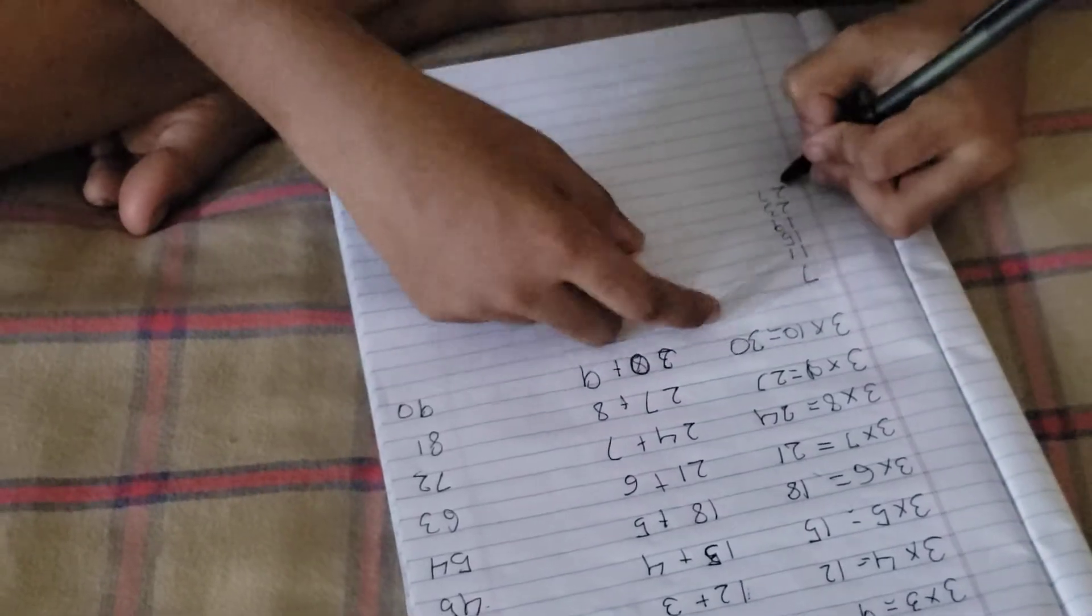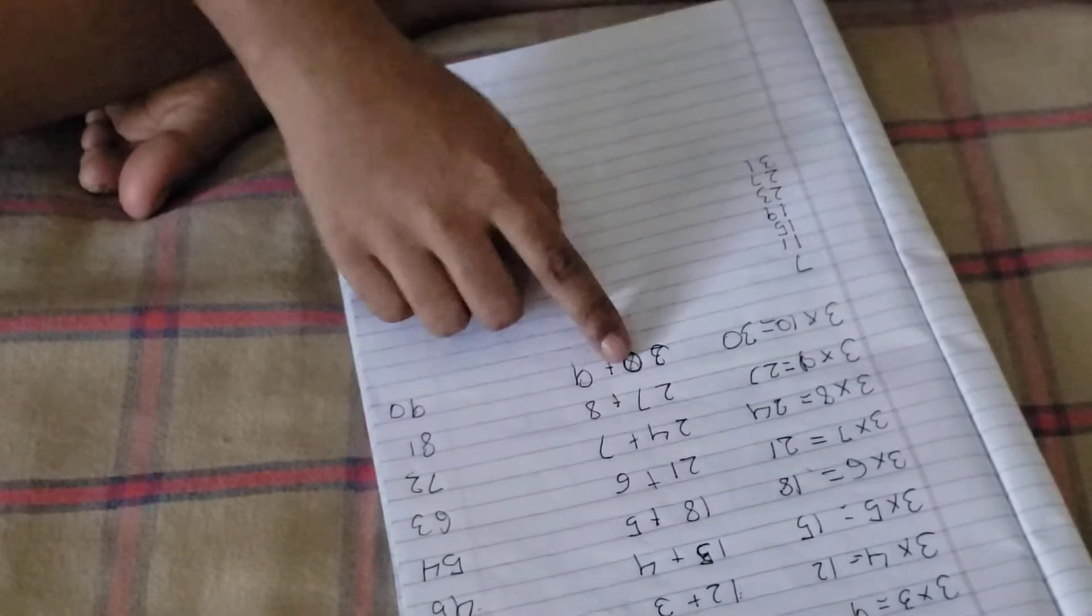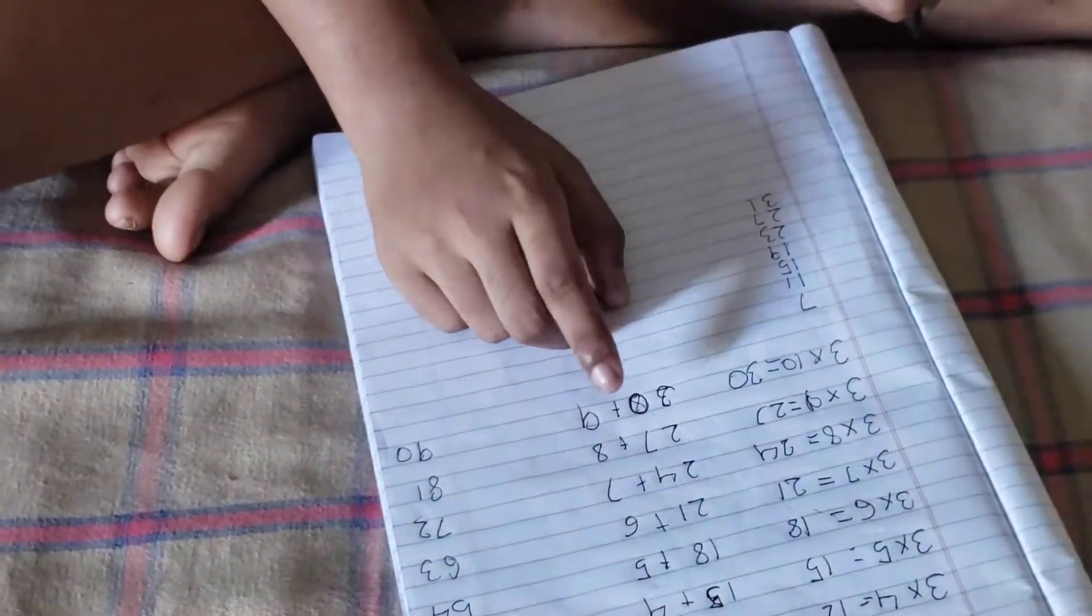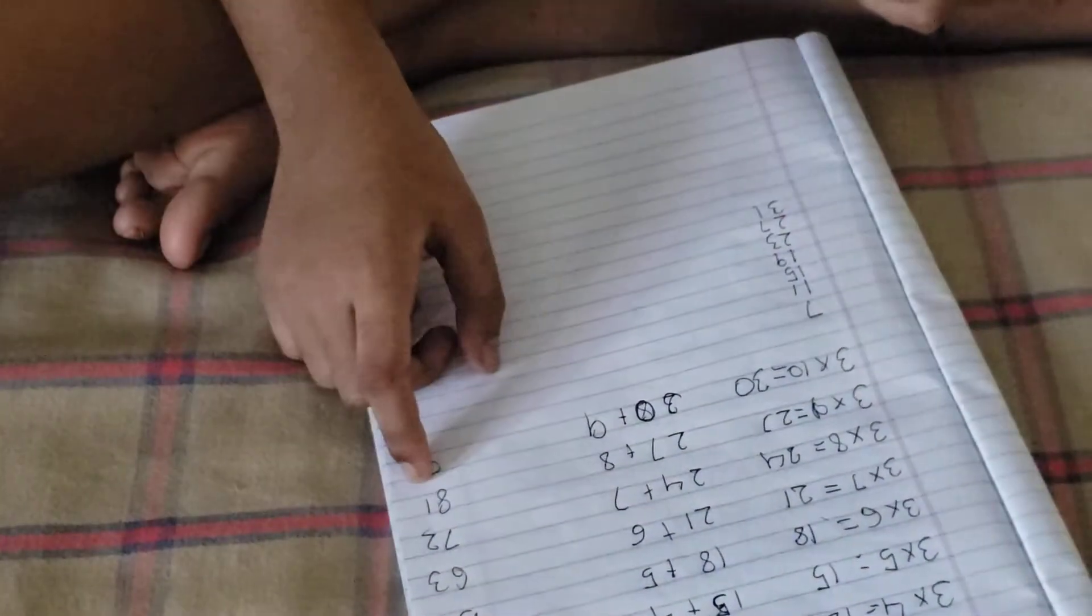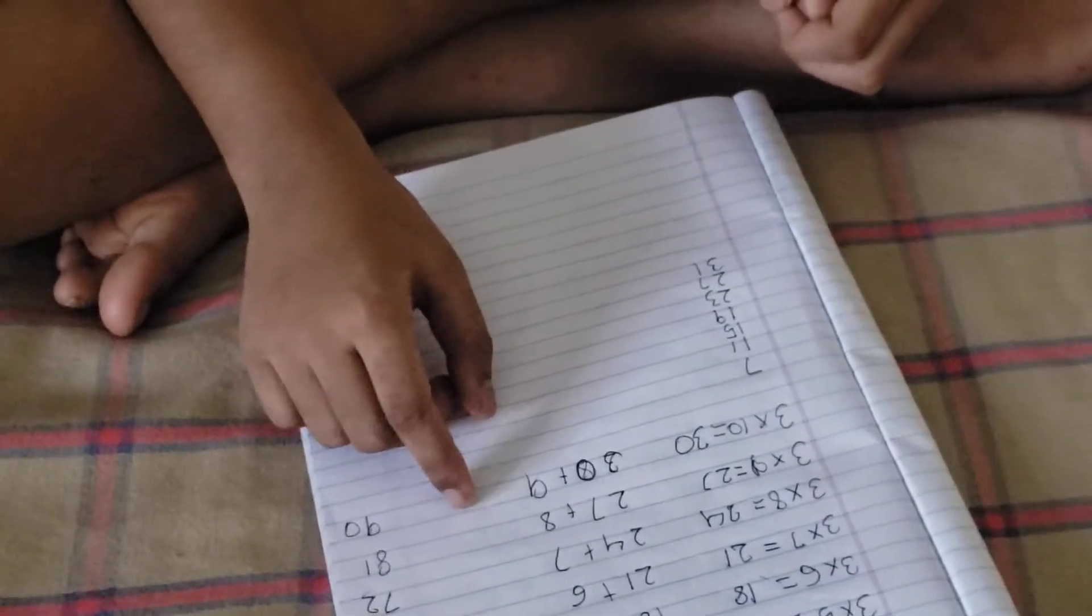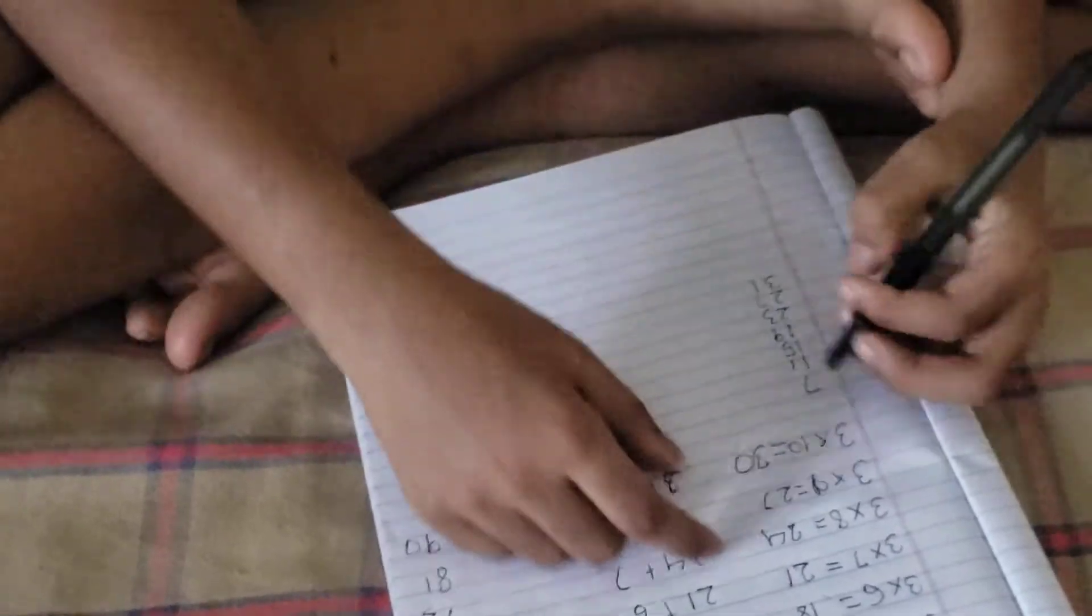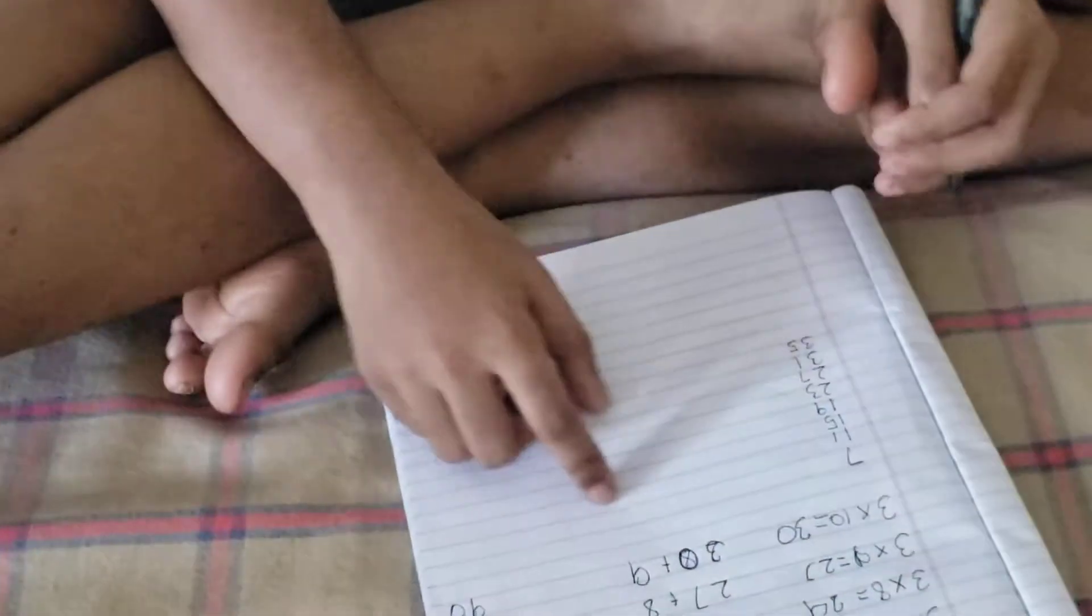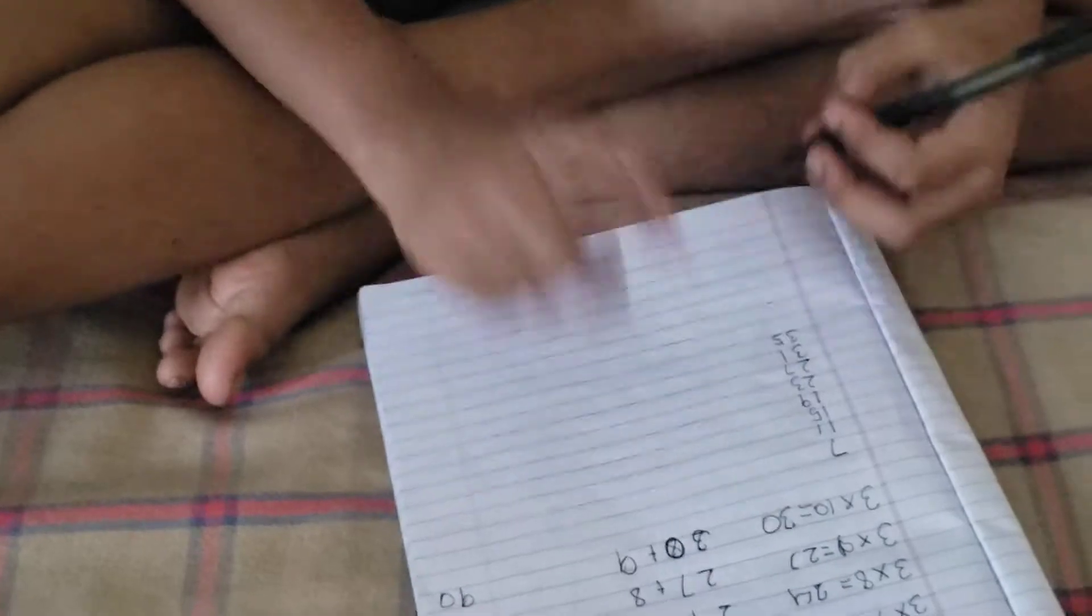27 plus 8. 30 plus 3, 35. So 35 will come here. Now last, 30 plus 9, 39.